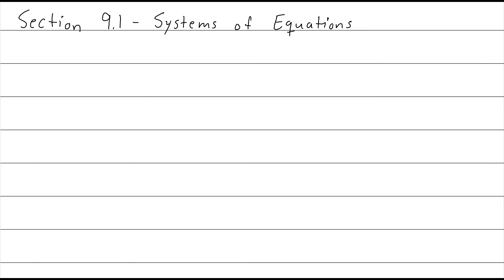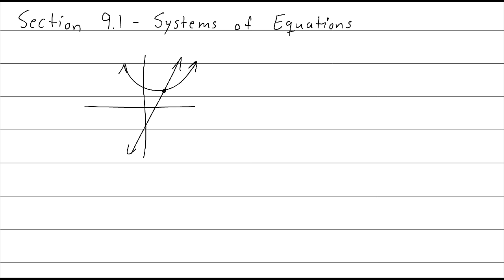There are a few ways you can think about a system of equations. First of all, if we assume that every equation has a graph — let's say you have this one and this one — they're going to intersect somewhere, most likely. That point, that x-comma-y coordinate, is the solution to the system. Usually you don't see it written as a graph; you're looking at their intersection. Usually what you see is an actual list of equations.